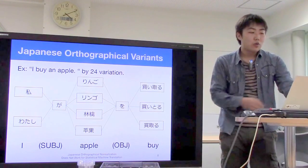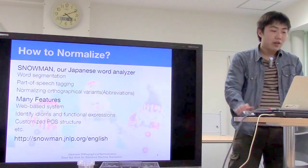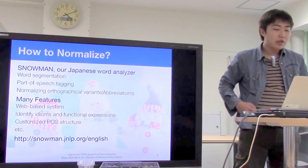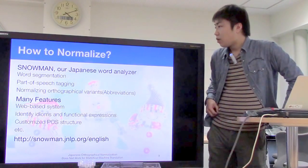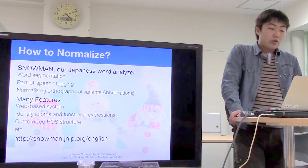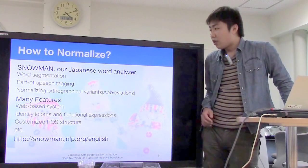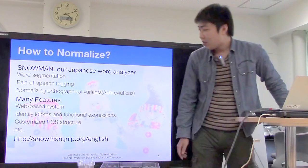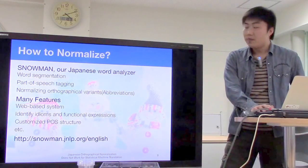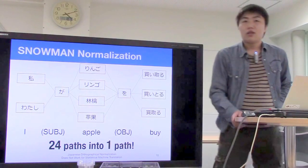Japanese orthographic variance causes a data sparseness problem. How do we normalize orthographic variance? We have developed SNOWMAN, our Japanese word analyzer, which provides word segmentation and part-of-speech tagging, and also normalizes orthographic variance. There are many features, but I won't explain them all here — please visit our site. Using this analyzer SNOWMAN, we can normalize 24 paths into 1 path. This is normalization.